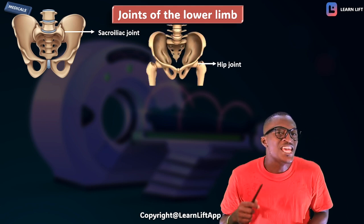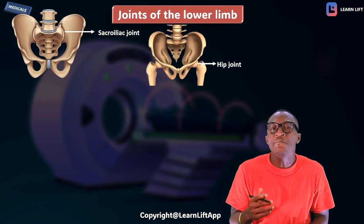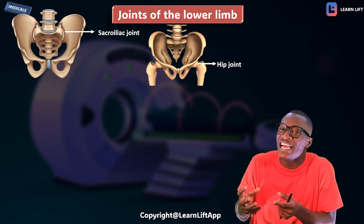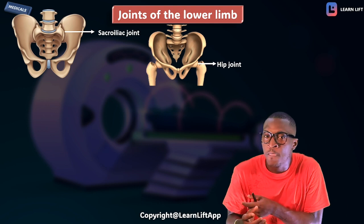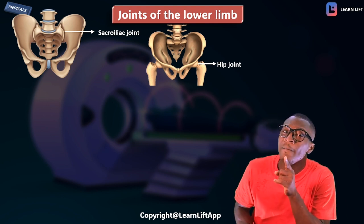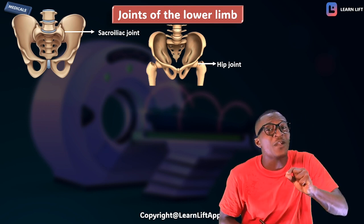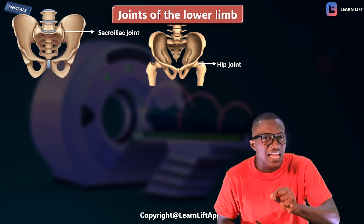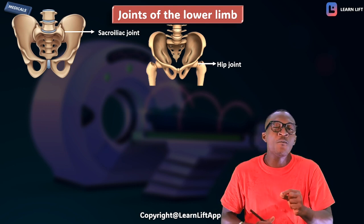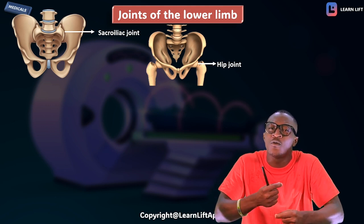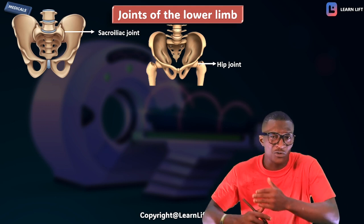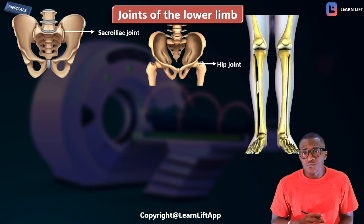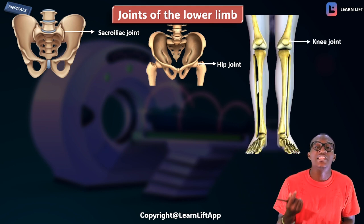The second joint is the hip joint, where the head of the femur fits into the acetabulum of the hip bone. Take note for MCQs: the commonest part of fracture in this area is the neck of the femur. The head of the femur is the commonest site for fracture.